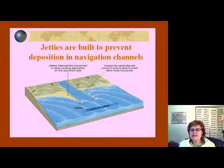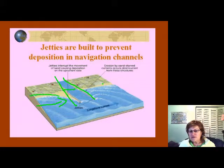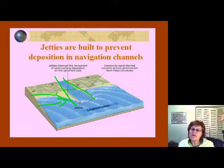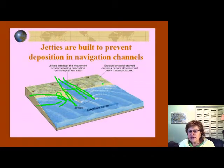The third structure is the jetty. Jetties are built to prevent sediment deposition in channels where boats come in. Without a jetty, the longshore current would deposit sediment across the channel, making it too shallow for boats. By building rock walls, the channel is kept deep. This produces deposition on one side and major erosion on the other.